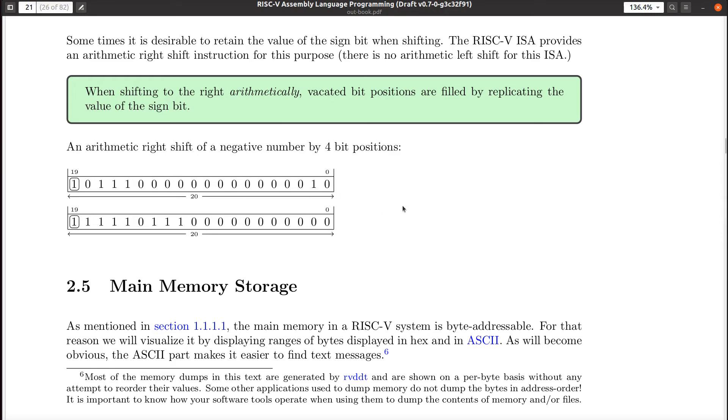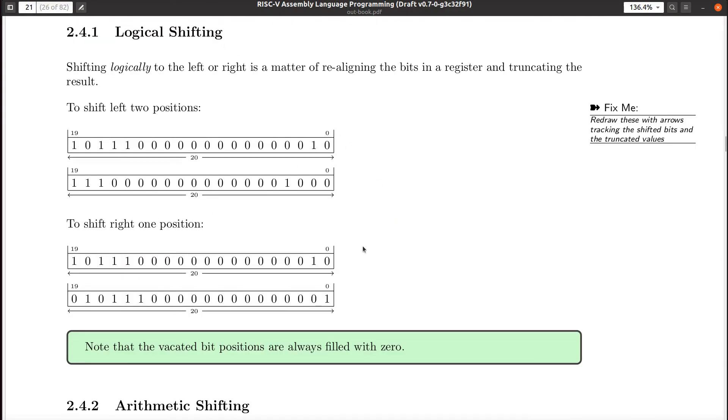When you multiply a number by 10, what do you do? You move the decimal place over one. You've just done a left shift in decimal. How do you divide a number by 10? Well, you move the decimal place the other direction, right? This is intuitive.